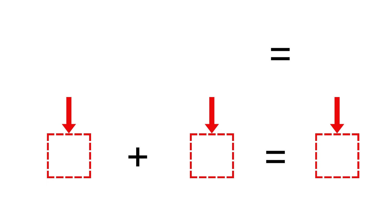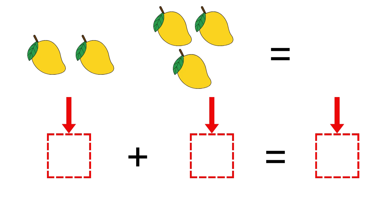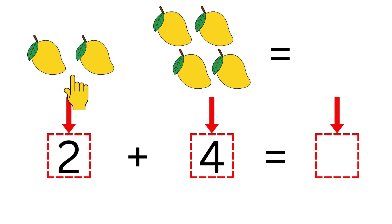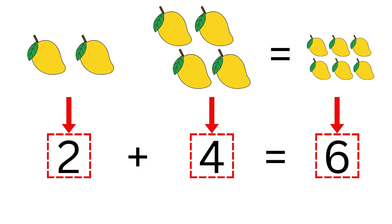Now, take a look. Let's add some elements. Here goes the first mango, second mango on the same side. On the other side, I will add the first mango, second mango, third mango, fourth mango. So, on one side we have two mangoes, and on the other side we have four mangoes. How many mangoes are there in total? Let's count: one, two, three, four, five, six. In total, we have six mangoes. Which means two plus four is equal to six.